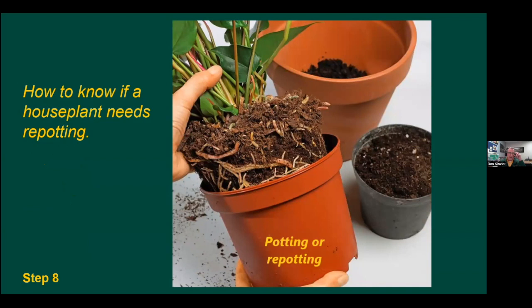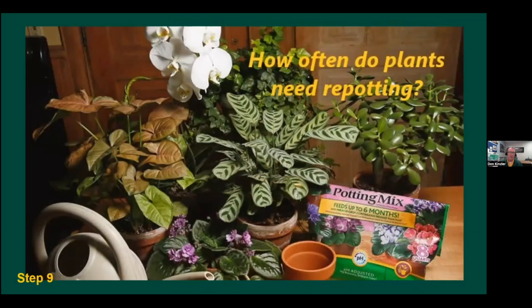To know if a plant should be repotted, slip it out of the pot. If you can see free soil, it's probably okay for a while. If the pot is so entangled with roots that you see no free soil, it's time to bump up to the next size pot. Some plants like Christmas cactus and jade plants have been in the same pot for 30, 40, or even 60 years. Most houseplants will probably need repotting every one to three years or so.